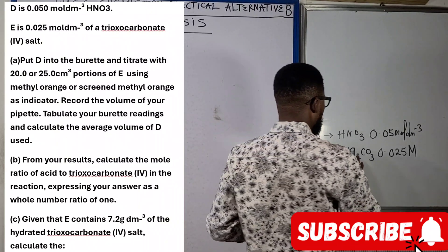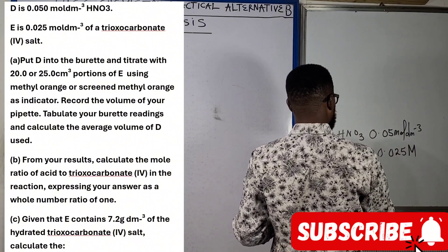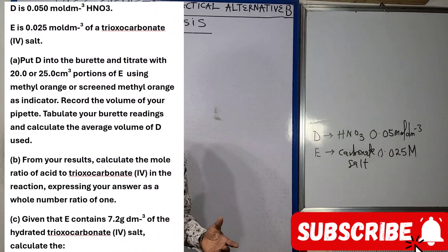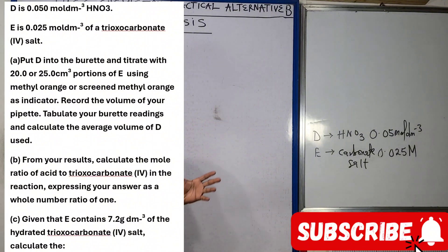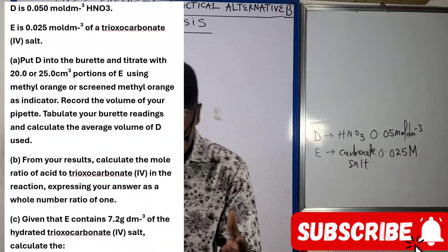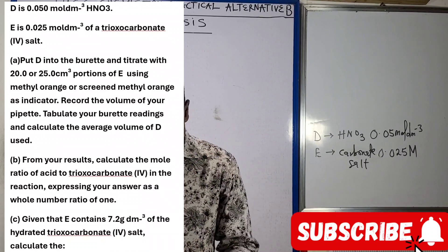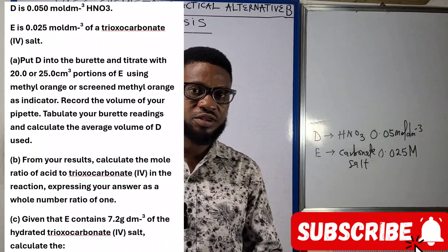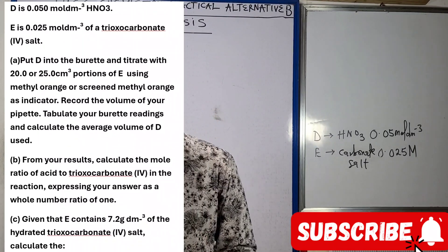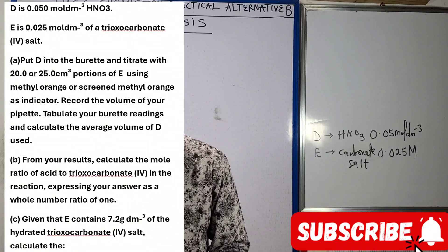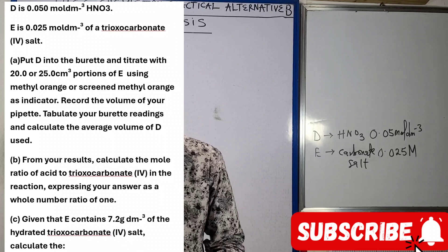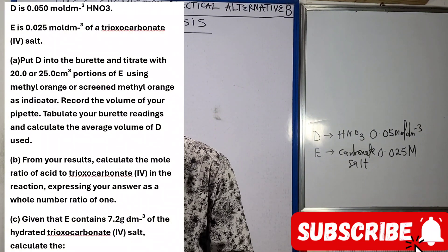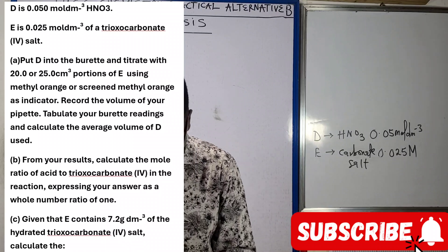It's 0.025 mol/dm³ of a carbonate salt — they didn't specify whether it was sodium, calcium, magnesium, or potassium carbonate. So E is just labeled as a carbonate salt solution. D is put into the burette and titrated with 20 or 25 cm³ portions of E using methyl orange as indicator. Record the volume from your pipette — here we are using a 25 cm³ pipette — tabulate your readings, and calculate the average volume of D used.